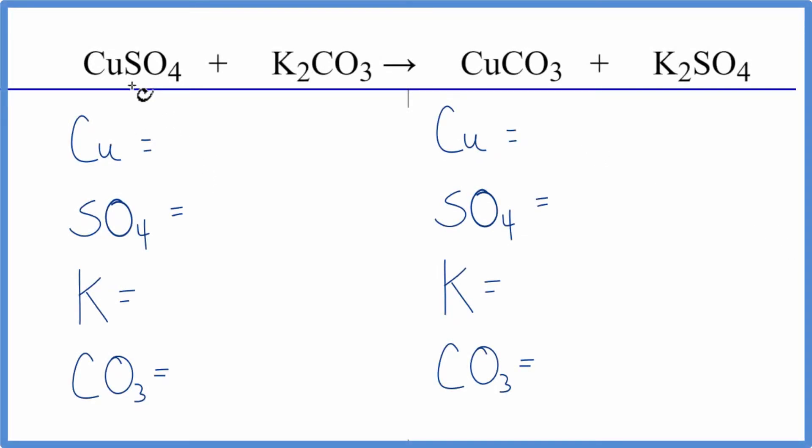To balance this equation we have copper sulfate plus potassium carbonate. This is a double displacement reaction. So let's count the atoms up. We'll use a little bit of a trick that you can use with double displacement reactions.